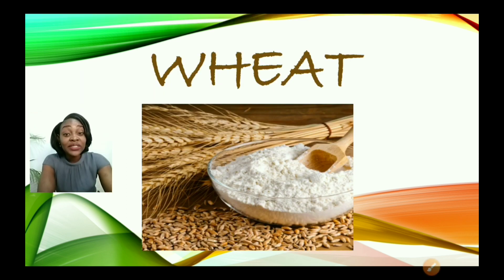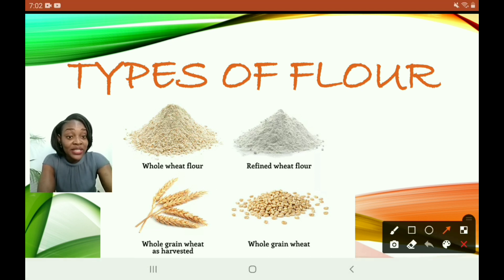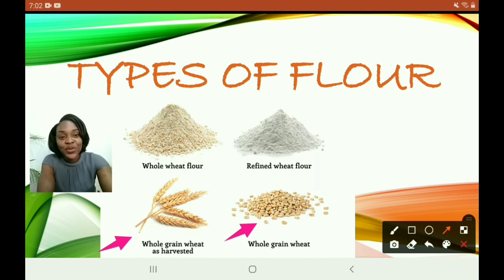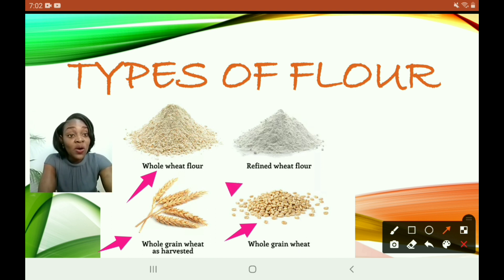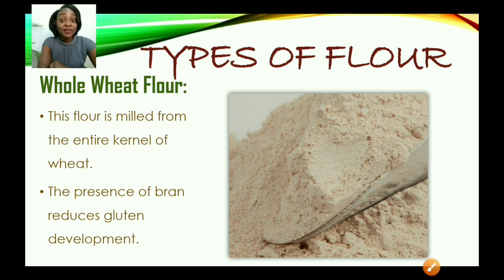Let us look in detail at the different types of flour. As you can see in this image, we have whole grain wheat as harvested. After cleaning, we end up with the whole wheat grain. After processing, we end up with whole wheat flour, and then the end product is refined wheat flour — which refers to white flour, just as refined sugar refers to white sugar.